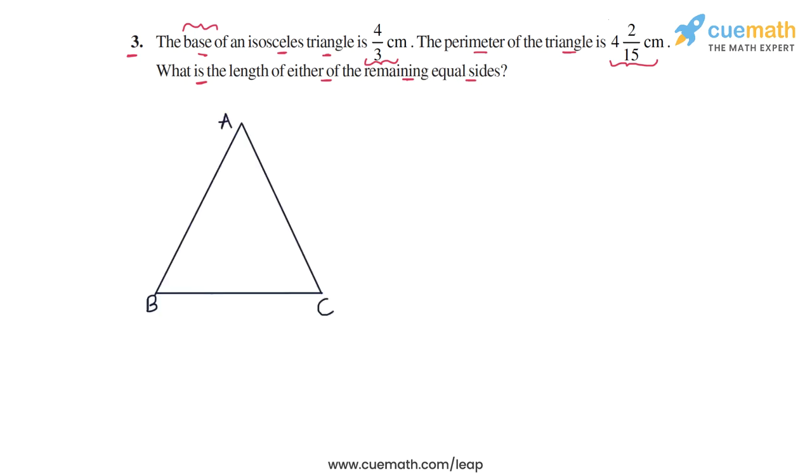So here's an isosceles triangle ABC that I have drawn in which AB and AC are the equal sides and BC, this side here, is the base. So we are told that the base has a length of 4 by 3 centimeters. So let's write 4 by 3 centimeters here.